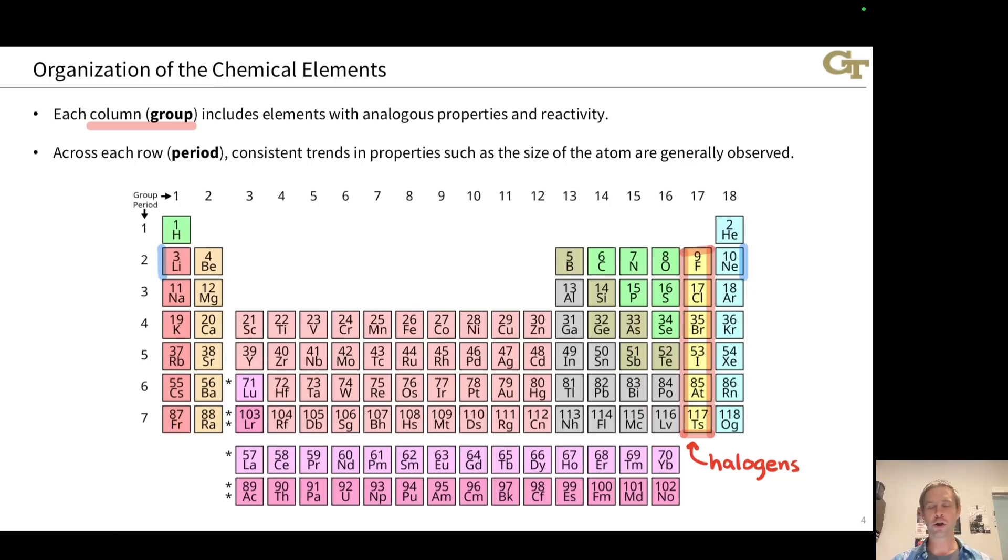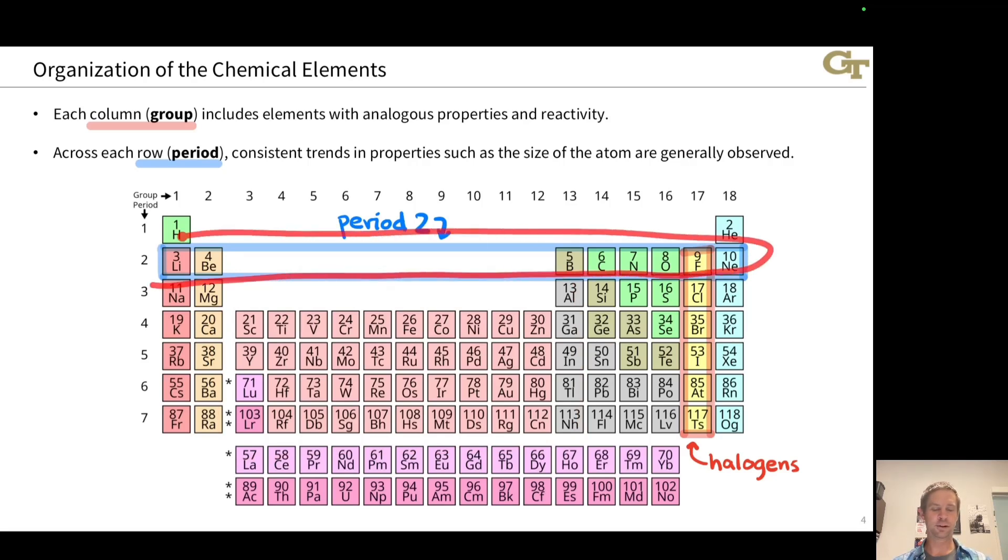The rows are known as periods. For example, you see here boxed in blue period 2, and notice that period 2 runs all the way across here. There's this big gap where we don't see any elements in groups 3 through 12 in period 2, but all of these elements across this entire row are the second period of the periodic table. The reason this is called a period is that frequently across a period there's a consistent trend in a property.